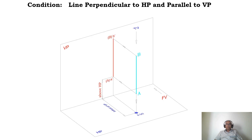The next case is a line perpendicular to HP and parallel to VP. You can see the vertical plane and the horizontal plane. When you look from the front view, I can see the vertical line, capital A and capital B, and the image falls on the vertical plane as A dash and B dash. The line is perpendicular to HP because it is 90 degrees to HP. If you look from the top view, the two endpoints capital B and capital A are equidistant from the vertical plane, so the line is parallel to VP, and capital A and capital B is at 90 degrees to HP — it is perpendicular to HP.